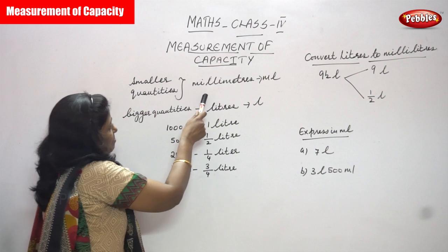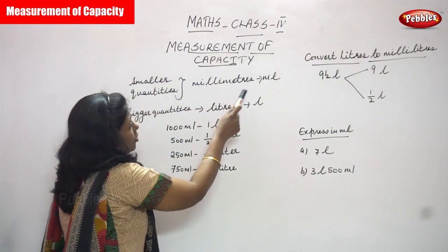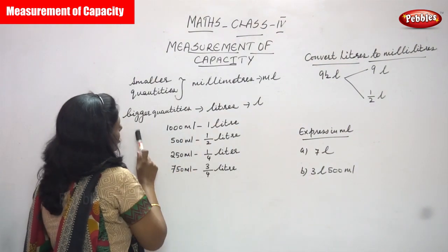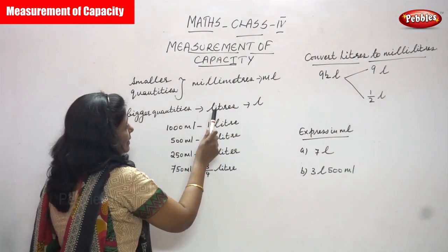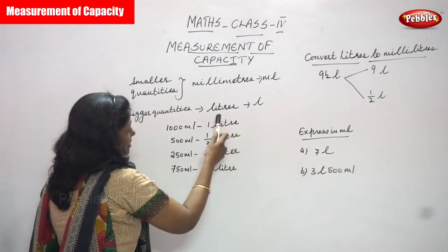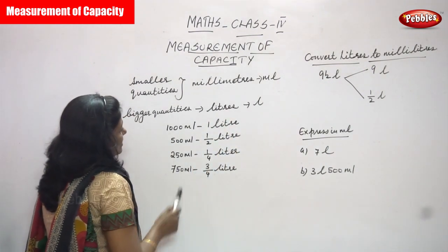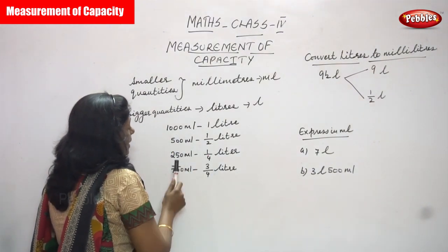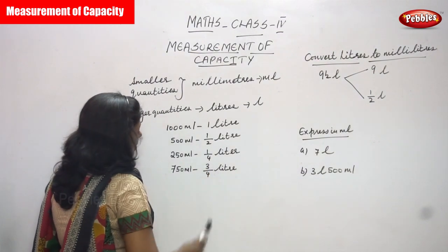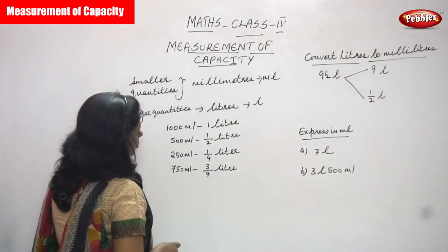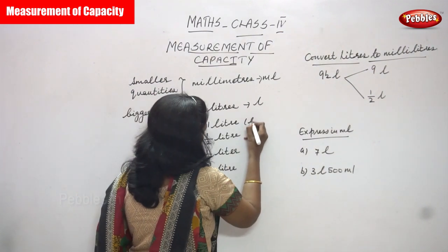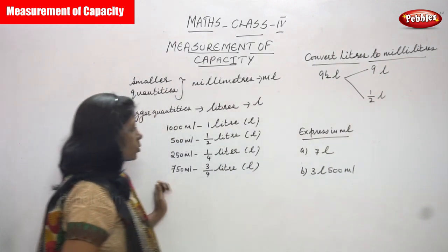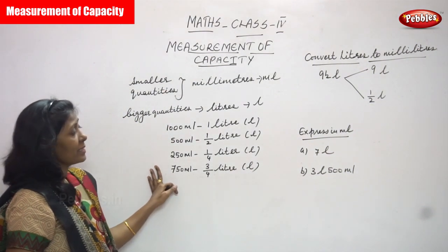Smaller quantities are measured in milliliters — short form ml. Bigger quantities are measured in liters — short form L. The formula to memorize: 1000 ml equals one liter, 500 ml equals half a liter, 250 ml equals one-quarter liter, and 750 ml equals three-quarter liter. Don't forget this formula.